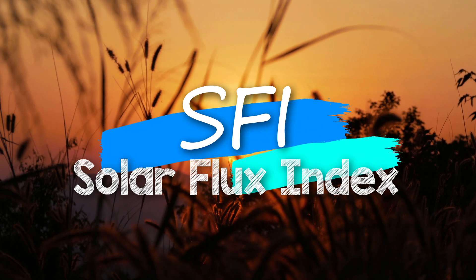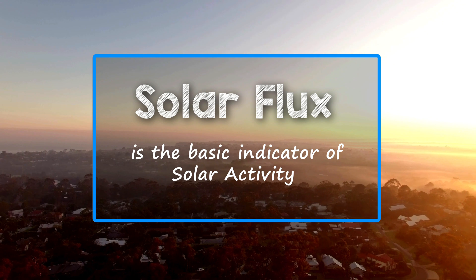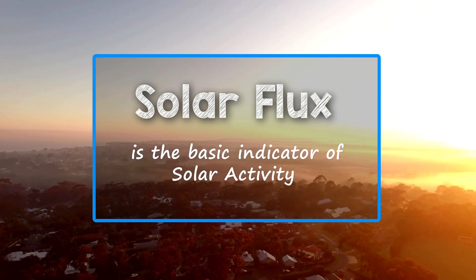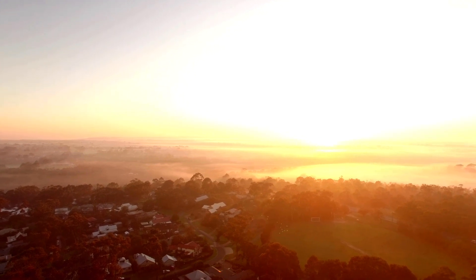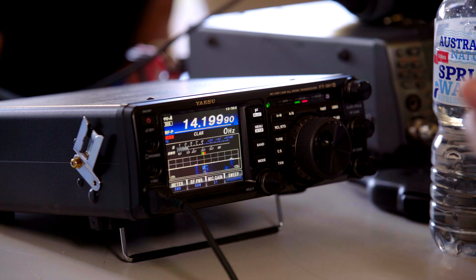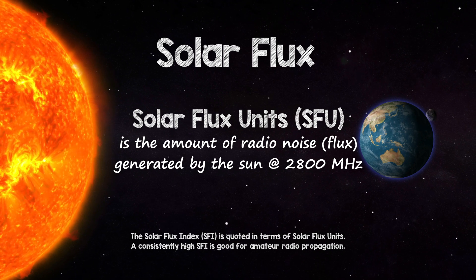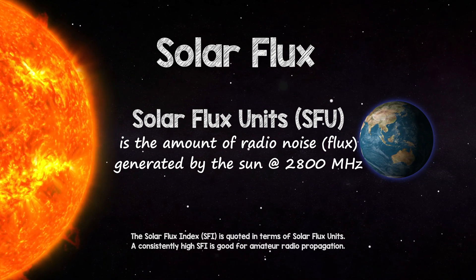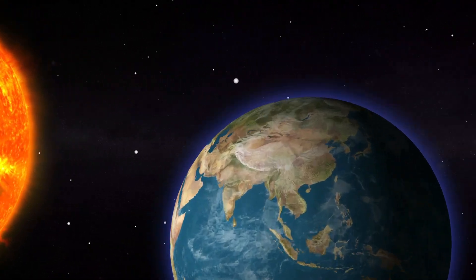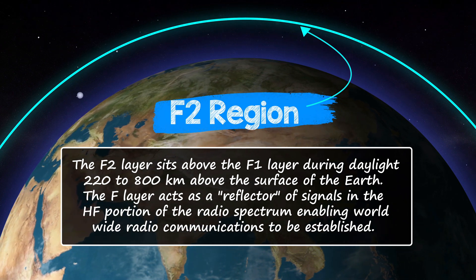One of the key solar indices is a measure known as solar flux. It's used as the basic indicator of solar activity and to determine the level or amount of radiation being received from the sun. The higher the solar flux, the better for amateur radio. Solar flux is measured in solar flux units and is the amount of radio noise or flux emitted at a frequency of 2800 megahertz. The solar flux is closely related to the amount of ionization and the electron concentration in the F2 region, giving a very good indication of conditions for long-distance communication.